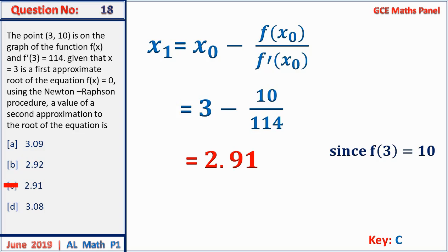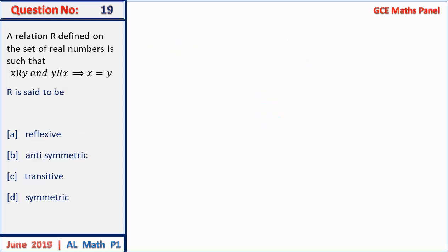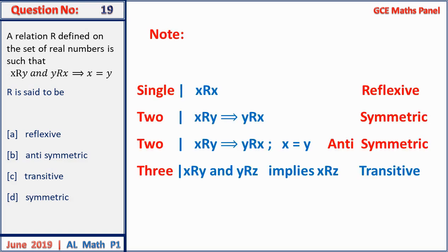Question 19: a relation is defined on real numbers where xRy and yRx implies x = y. Recall: if x relates to itself, it is reflexive; if xRy and yRx, it is symmetric; if xRy and yRx implies x = y, it is anti-symmetric; three variables gives transitivity. The result here is B — anti-symmetric.